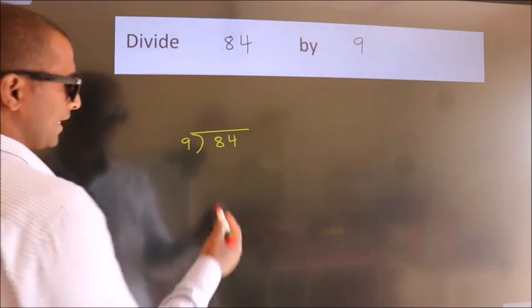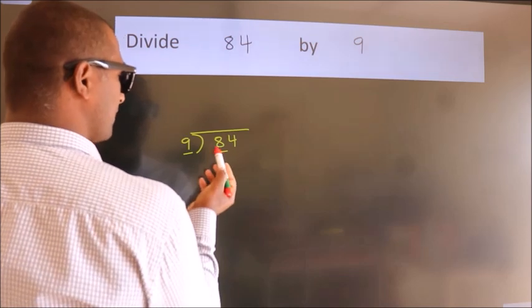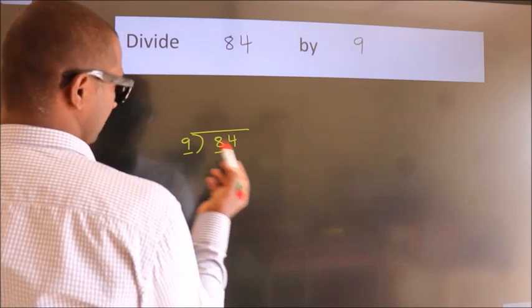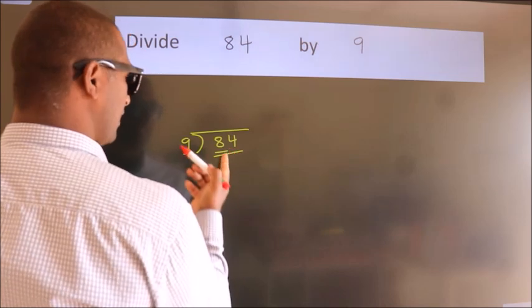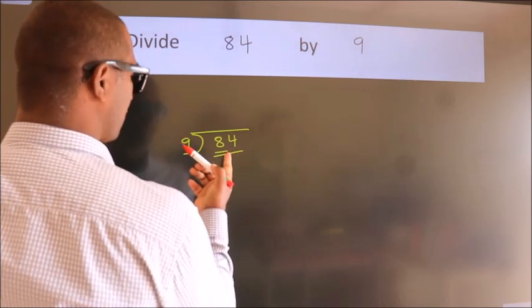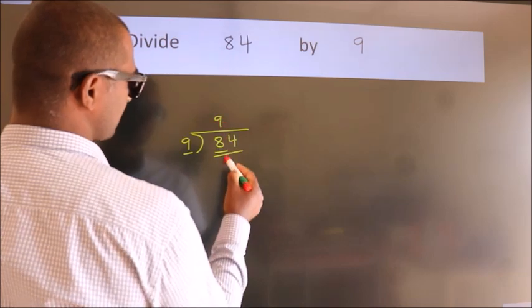Next, here we have 8, here 9. 8 is smaller than 9, so we should take two numbers, 84. A number close to 84 in the 9 table is 9 nines, 81.